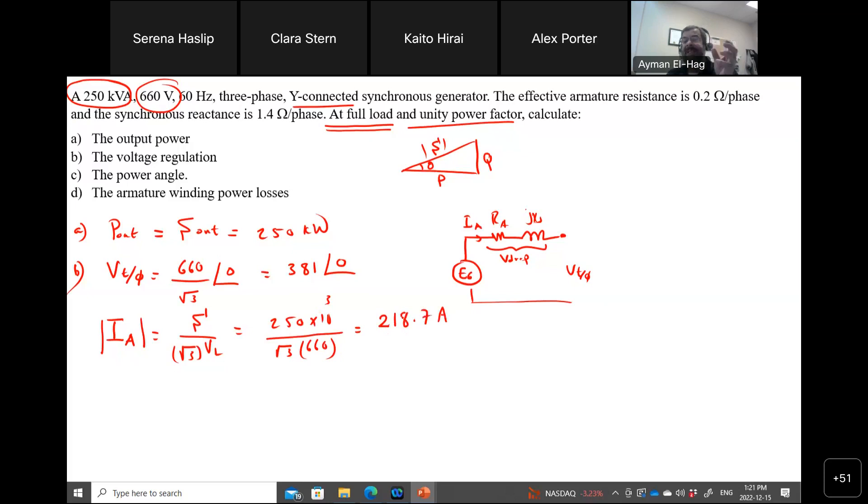And this will give me a current magnitude equal to 218.7 amps. Now that is the magnitude. Now I need to find I_A, meaning the phasor. Now I_A, not just the magnitude, but the magnitude and the angle. Now it's a unity power factor,